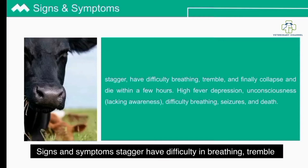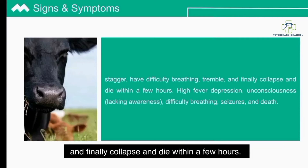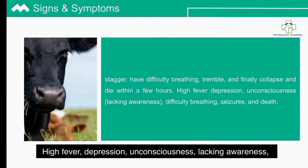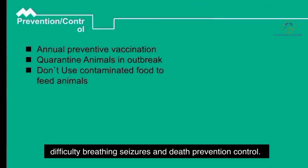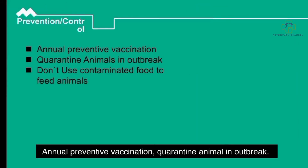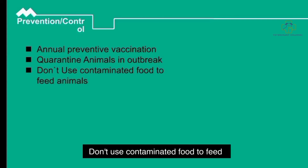Signs and symptoms include staggering, difficulty breathing, trembling, and finally collapse and death within a few hours. Other signs include high fever, depression, unconsciousness, seizures, and death. Prevention and control measures include annual preventive vaccination, quarantine of animals during an outbreak, and not using contaminated food to feed animals.